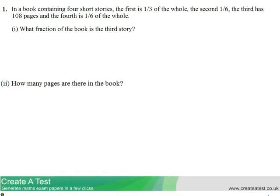Now all four stories put together must equal a whole book. So what we can start off by doing is thinking that 1/3 of a book, add 1/6 of a book, add this third section we don't know the size of, plus another 1/6 of the book equals 1.